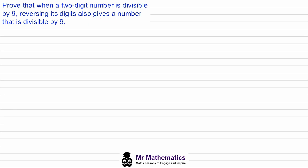For this question we need to think about the two-digit numbers that are divisible by 9. These are 18, 27, 36, 45, 54, 63, 72, 81, 90, and 99. If we go beyond 99 we're looking at a three-digit number, and if we go below 18 we're looking at a one-digit number.